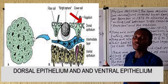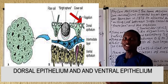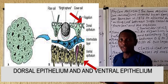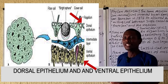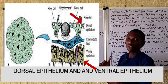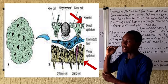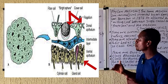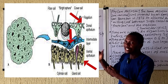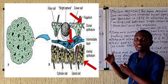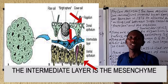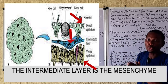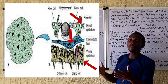The two layers are the top epithelial layer, or the upper epithelial layer, and the bottom ventral layer. Between these layers you can see from the diagram displayed on the board that there is an intermediate layer, and this intermediate layer is actually called the mesovine.